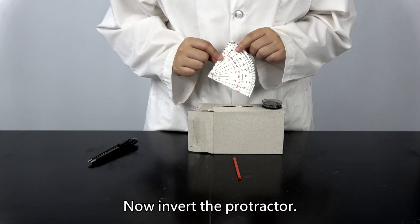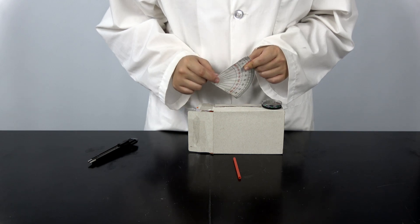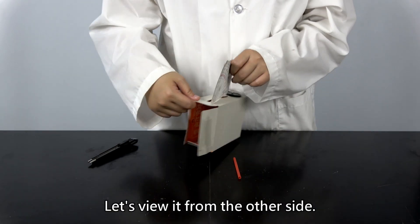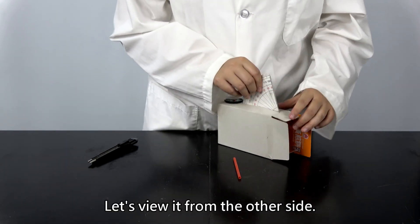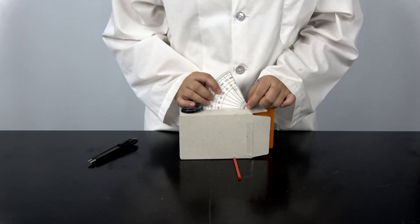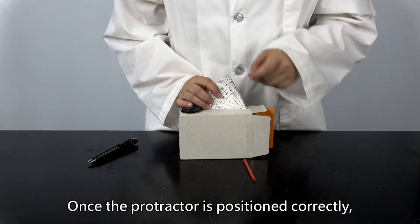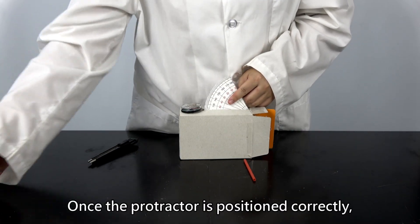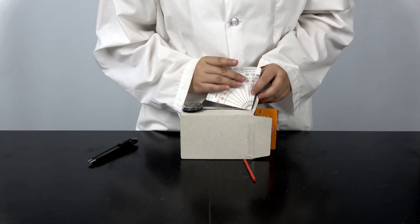Now invert the protractor. Let's view it from the other side. Notice that the zero is now on top. Once the protractor is positioned correctly, tape it onto the carton.